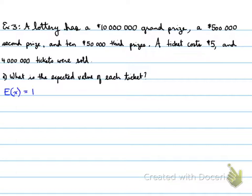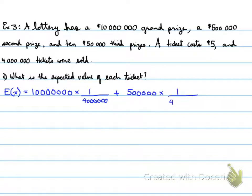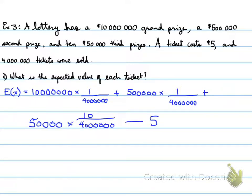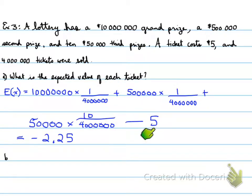The expected value is: $10,000,000 × (1/4,000,000) + $500,000 × (1/4,000,000) + $50,000 × (10/4,000,000) − $5. We subtract $5 because each ticket costs $5. The expected value works out to −$2.25, meaning you will lose $2.25 per ticket on average.